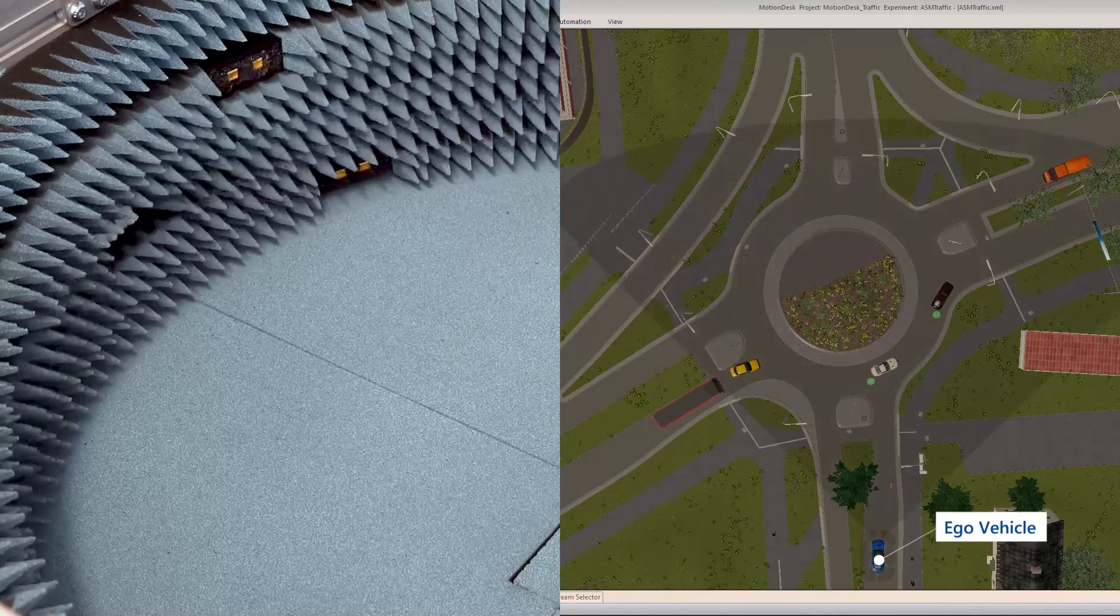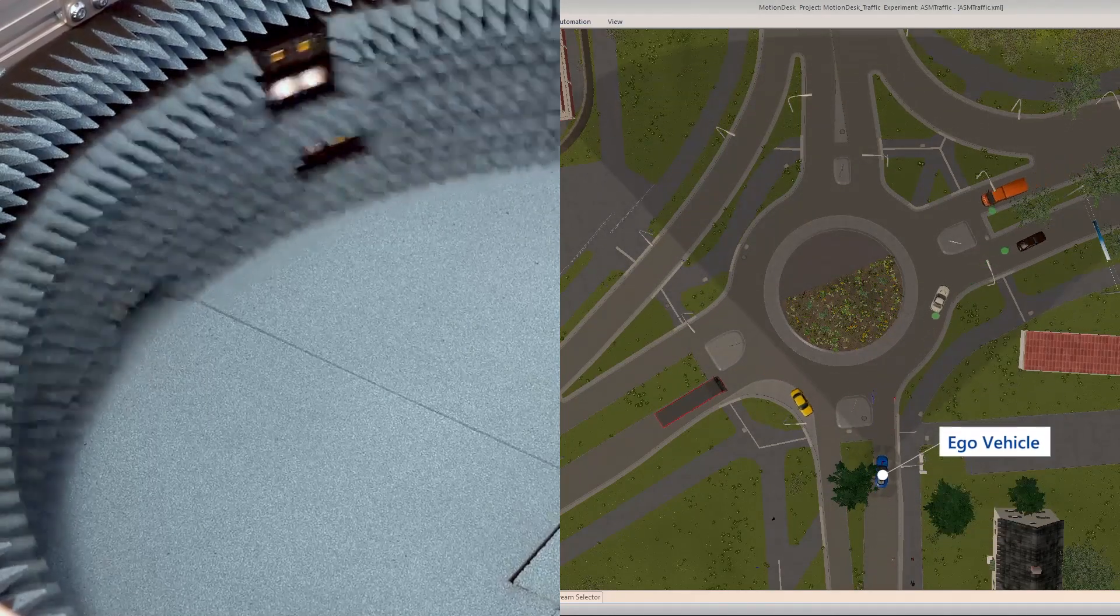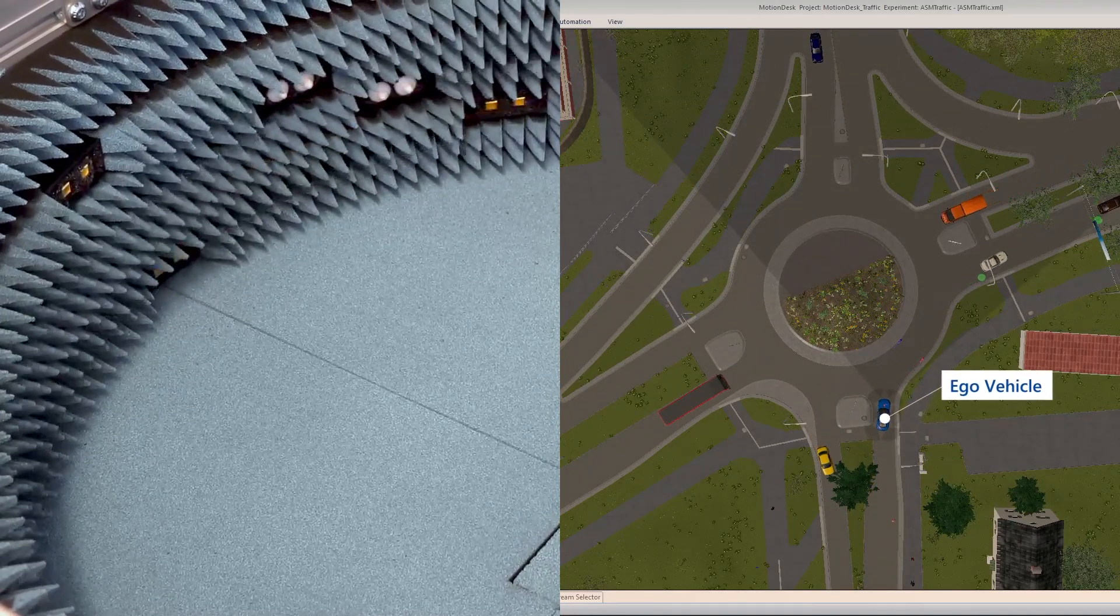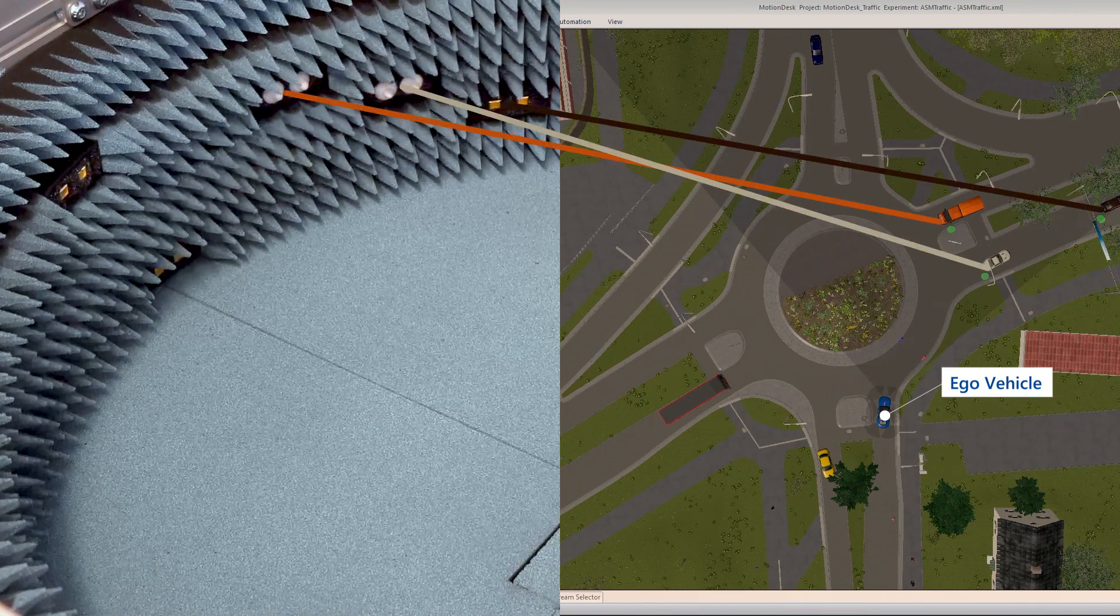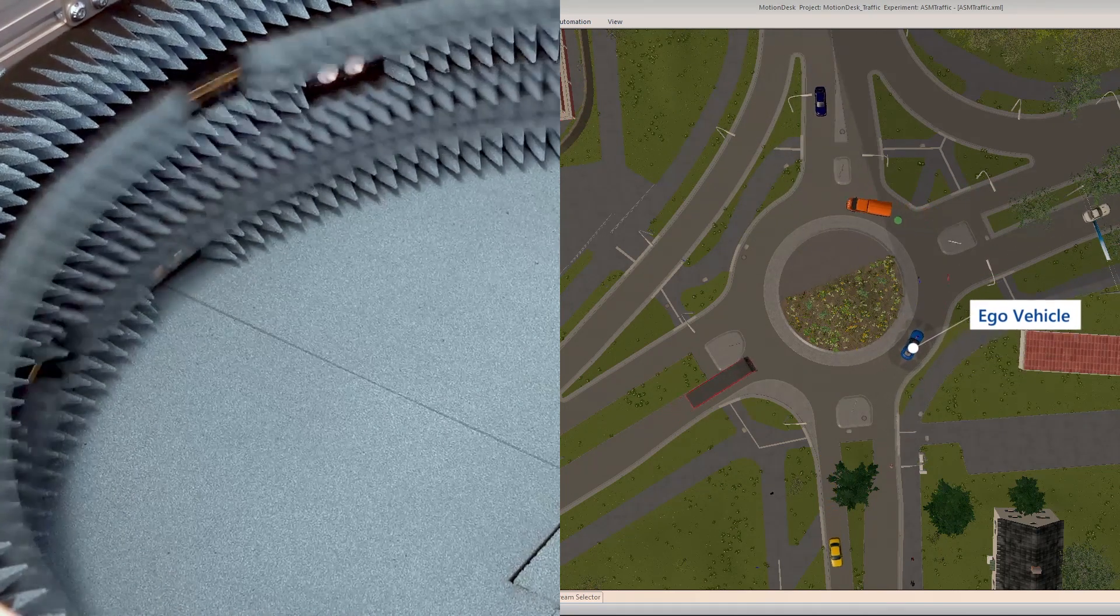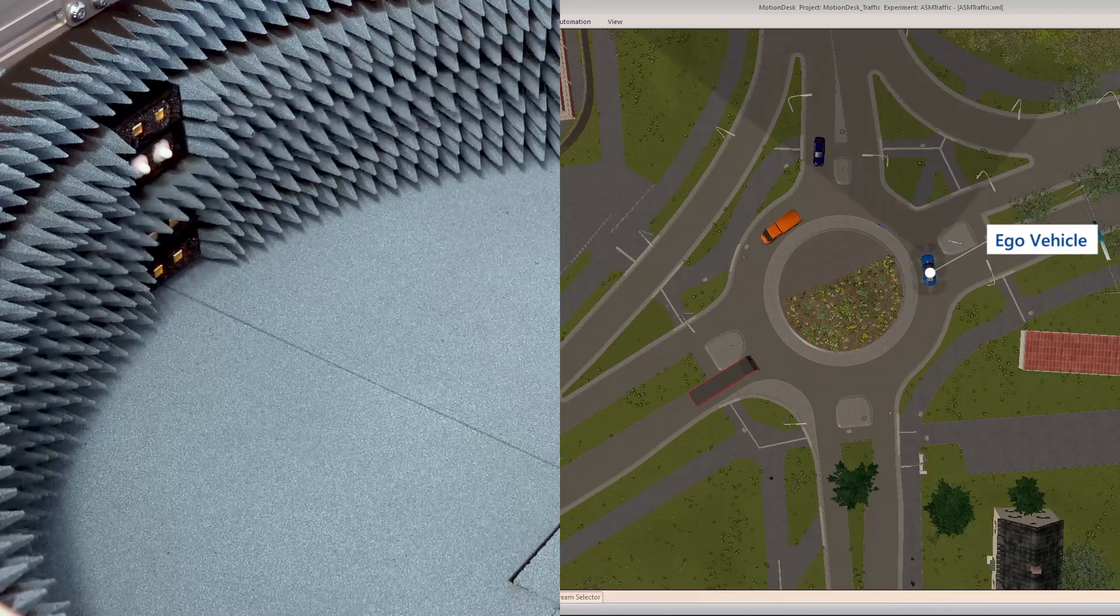This simulation setup includes a front radar which is mounted at the front of the virtual ego vehicle. The green dots symbolize simulated objects detected by the radar sensor.